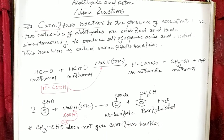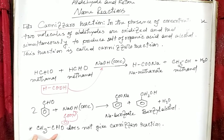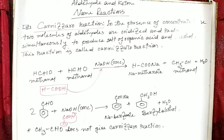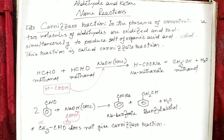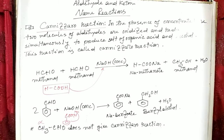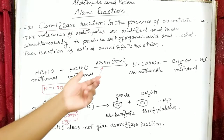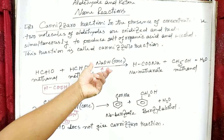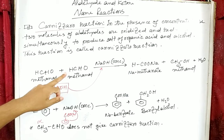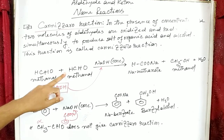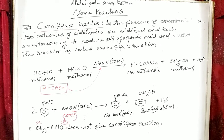If you observe the structural formula of ethanal, you will see there is an alpha carbon and the alpha carbon contains hydrogen atoms. That is why ethanal does not give the Cannizzaro reaction. The conditions of Cannizzaro reaction are: the reaction occurs in the presence of concentrated base like sodium hydroxide or potassium hydroxide, and there must be no hydrogen atom at the alpha carbon. Those two are the conditions of Cannizzaro reaction.